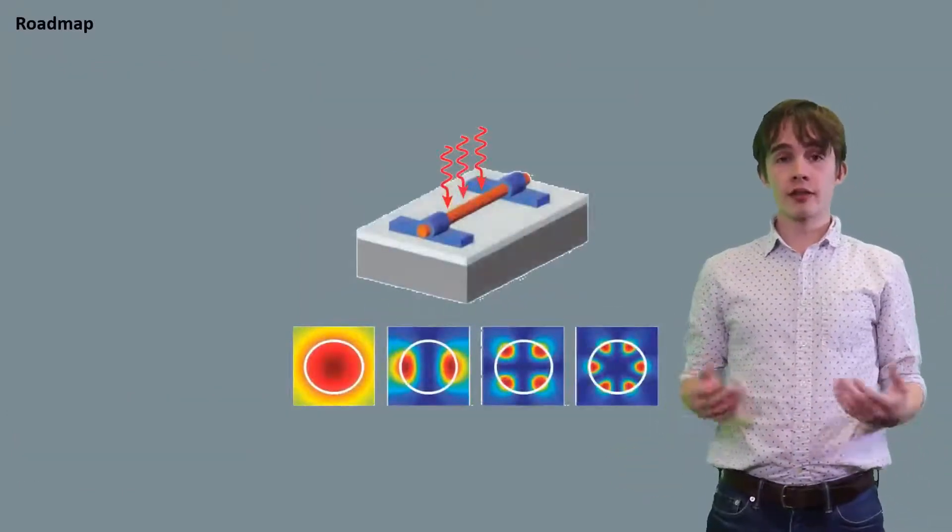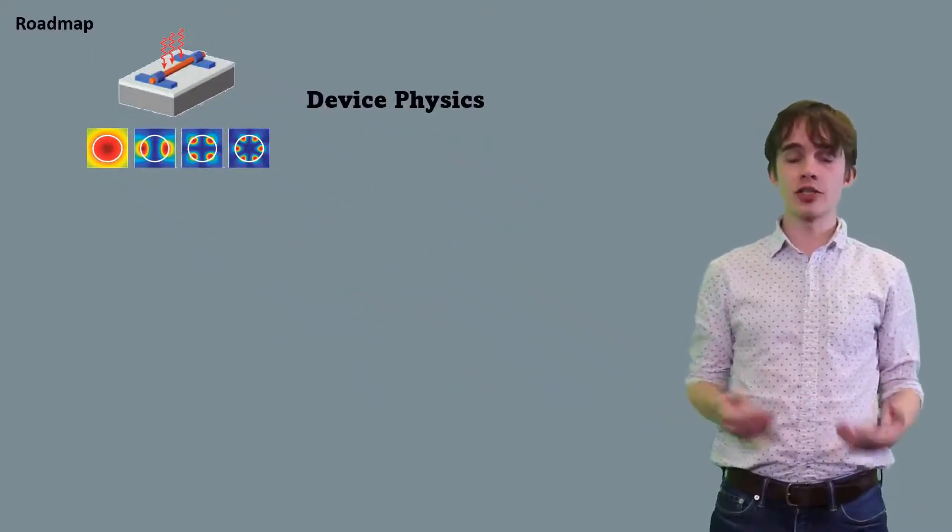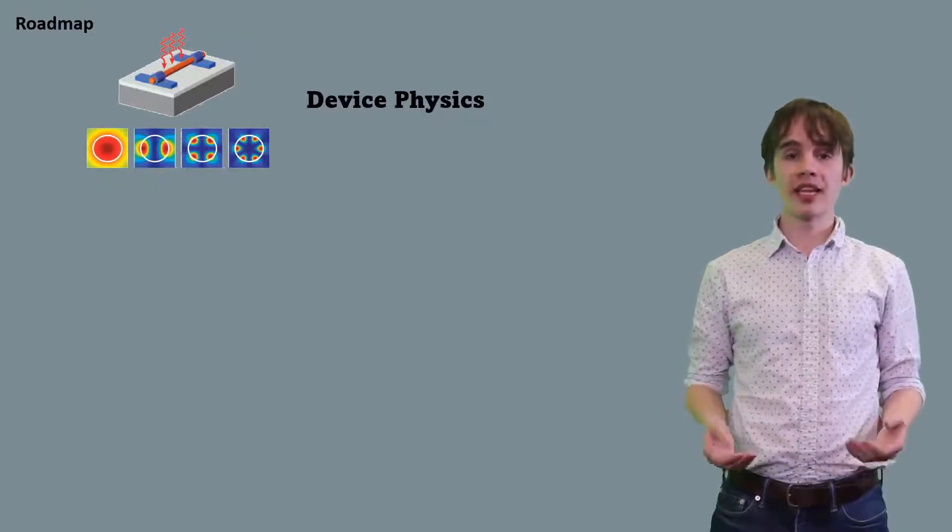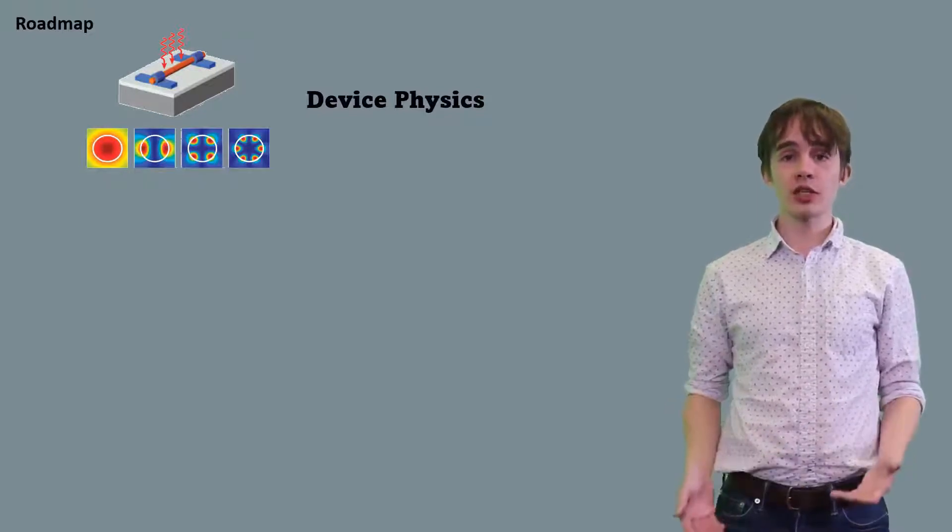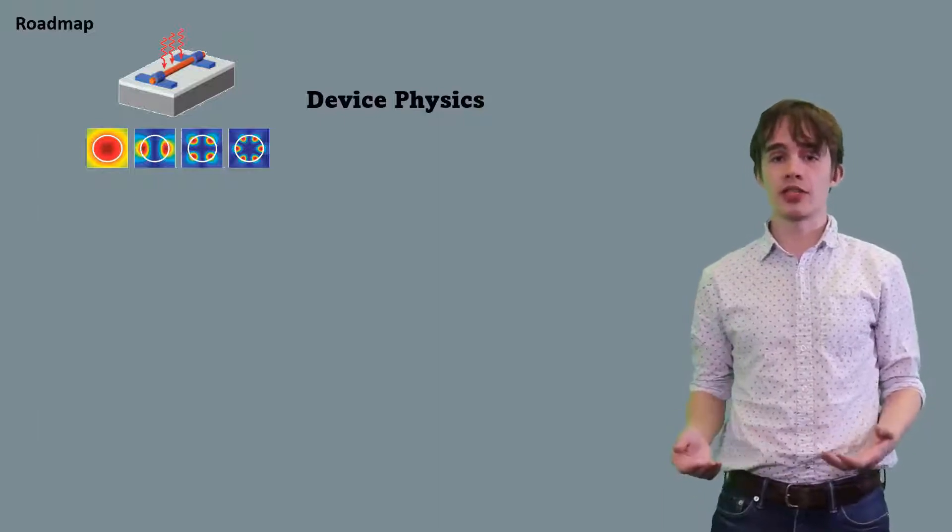This presentation has three main sections. First, device physics. Here, we'll discuss the nanowire geometry in detail and the effects that it has on solar cell performance. We will pay especially close attention to the physical mechanisms that differ from the behavior of conventional planar solar cells.